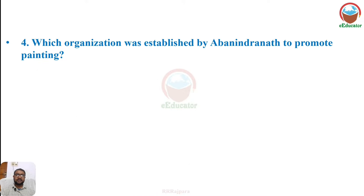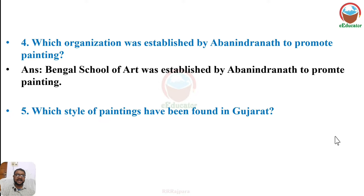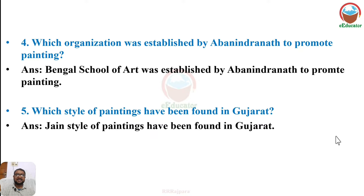Fourth: which organization was established by Abhinindranath to promote painting? The Bengal School of Art was established by Abhinindranath to promote painting. Fifth: which style of painting has been found in Gujarat? The Jain style of painting has been found in Gujarat.